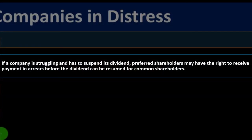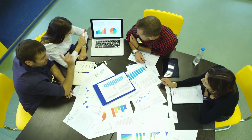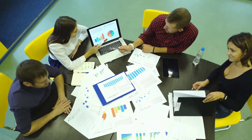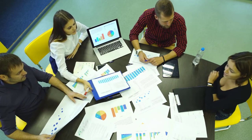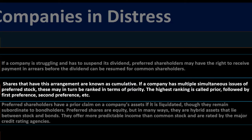If a company is struggling and has to suspend its dividends, preferred shareholders may have the right to receive payment in arrears before the dividend can be resumed for common shareholders. The company may have the capacity to not pay dividends to both common and preferred shareholders, but they may be required to pay backed-up unpaid dividends — dividends in arrears — before paying common shareholders. Shares with this arrangement are known as cumulative.